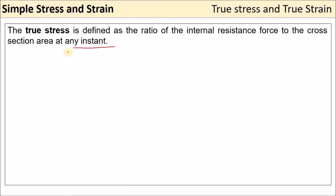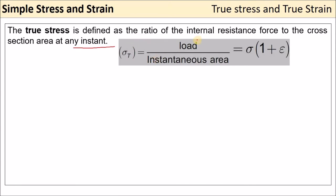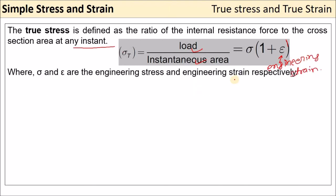True stress is defined as internal resistance force to the cross-section area at any instant — load divided by instantaneous area. True stress σ_t equals σ(1 + μ), where μ is engineering strain. Engineering stress σ and engineering strain μ are calculated using load divided by the initial area.